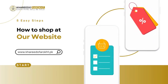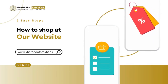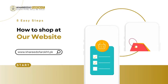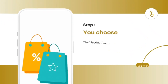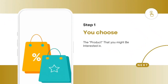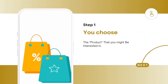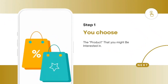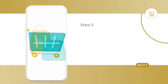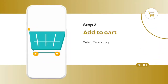Five easy steps: how to shop at our website www.kharitofrock.pk. Step 1: choose the product that you might be interested in. Step 2: add to cart — select to add the product in your cart and go to buy now.